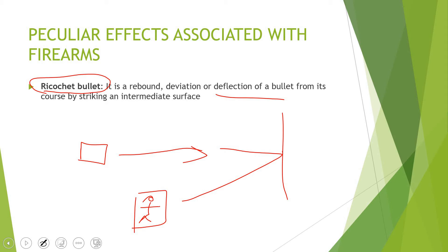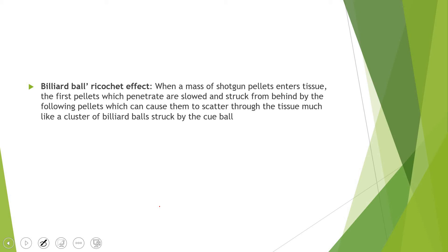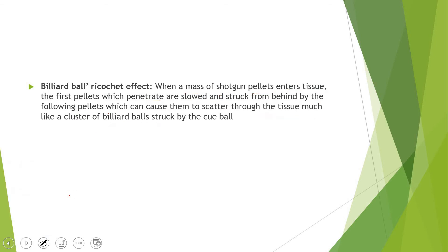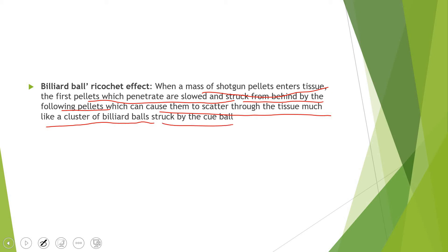Ricochet is not always caused by a wall — even bone inside the body of the victim can cause deflection and potential damage to other areas. The billiard ball ricochet effect occurs when a mass of shotgun pellets enters the tissues: the first pellets that penetrate are struck from behind by following pellets, which cause them to scatter through the tissue much like a cluster of billiard balls struck by a cue ball.